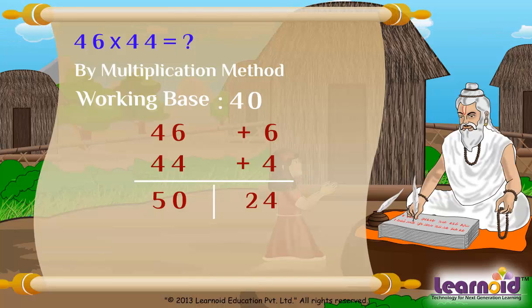We will take 2 carry. Now before applying carry we will multiply left side number by same multiple which we have taken for working base, that is 4. 50 into 4 equals 200. Now we add carry 2, so 200 plus 2 equals 202. 46 into 44 equals 2024.